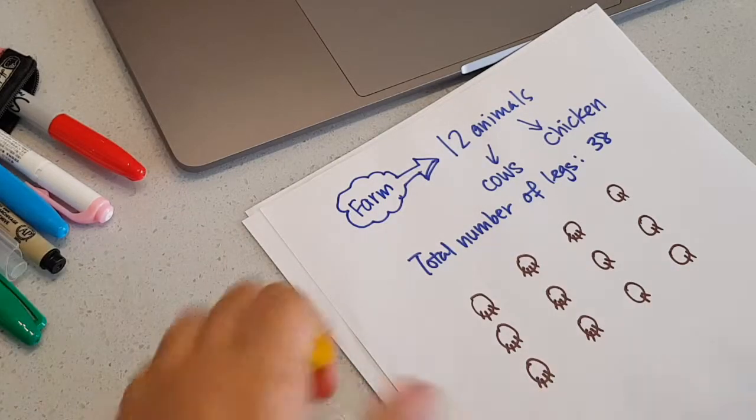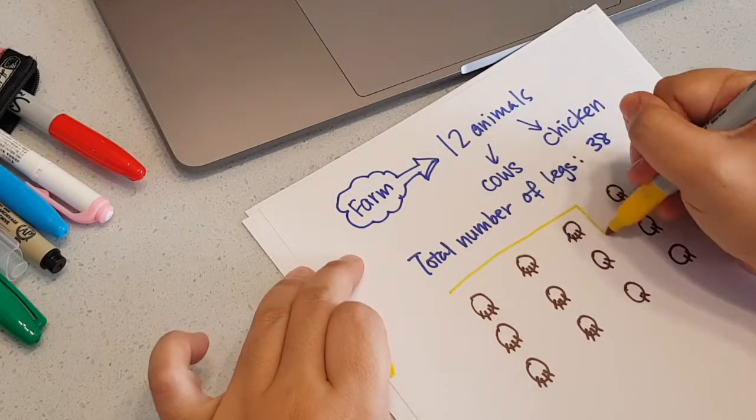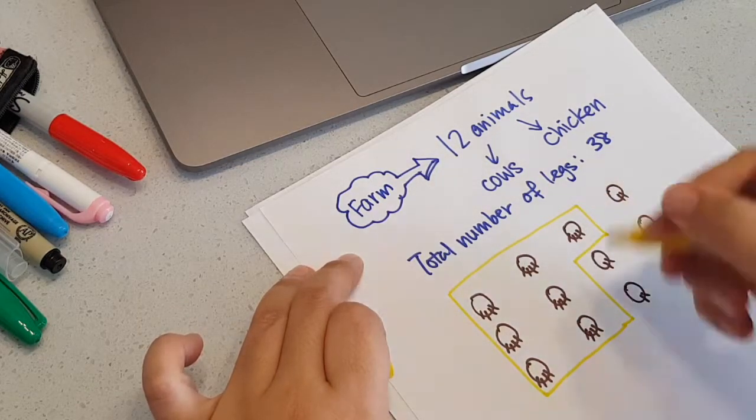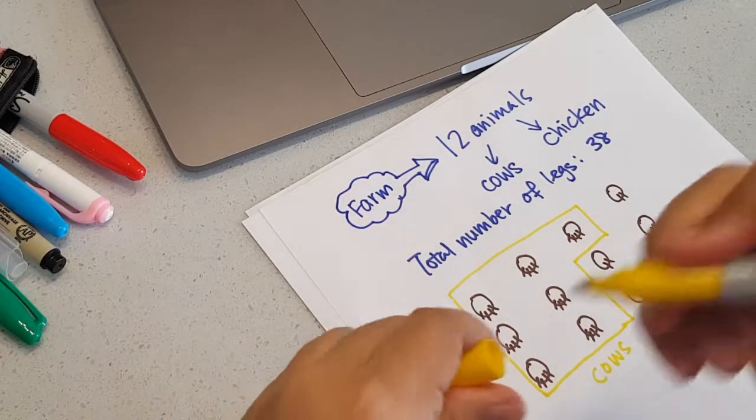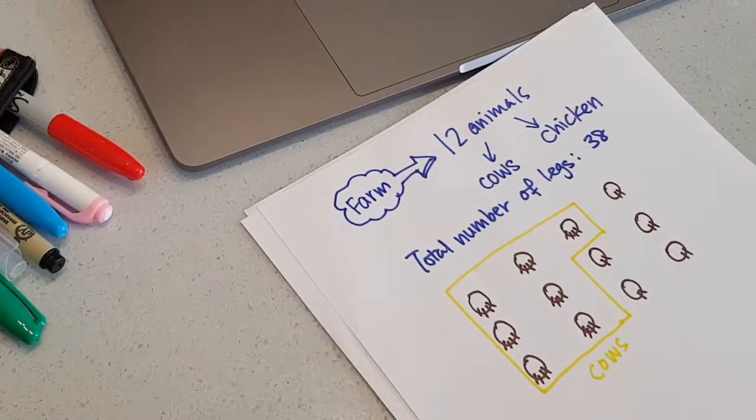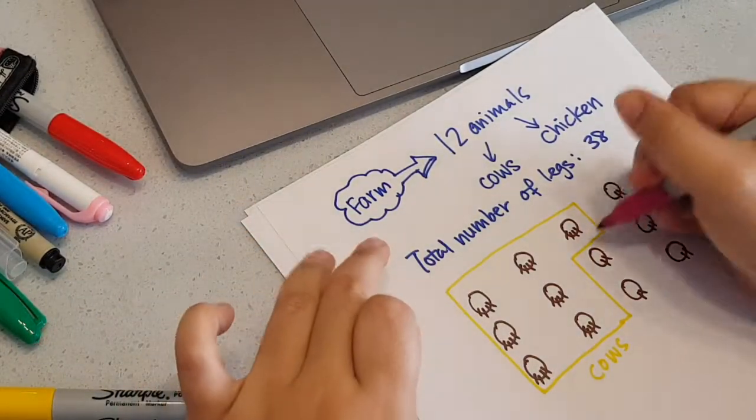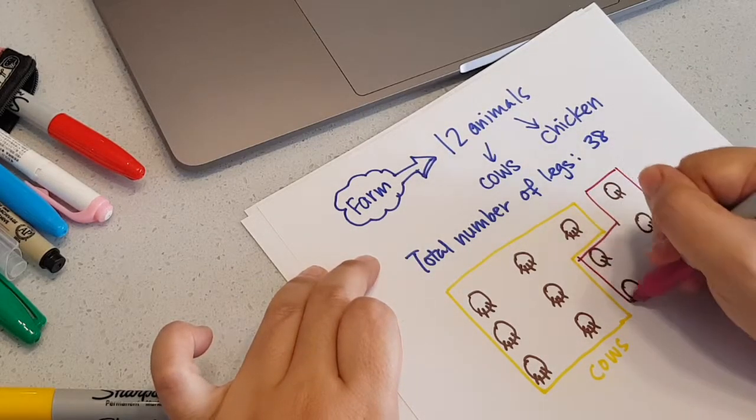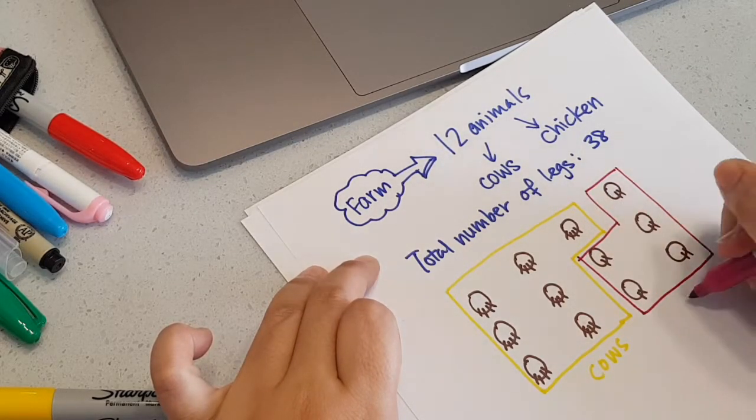From here I know that all those with four legs are cows, and those with two legs are chickens.